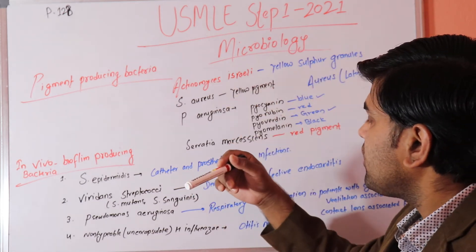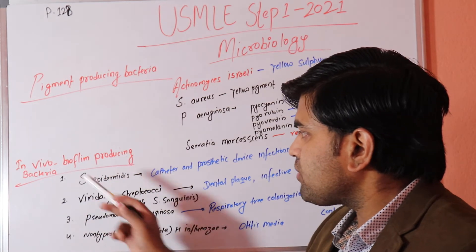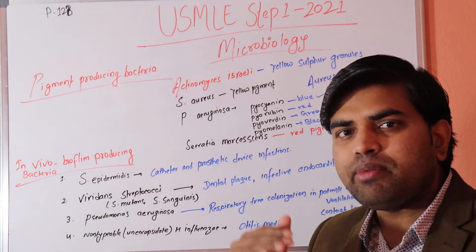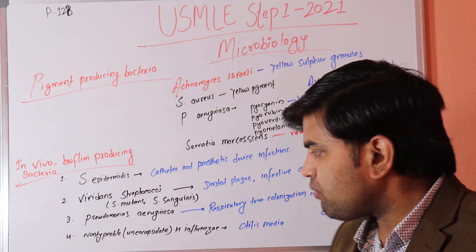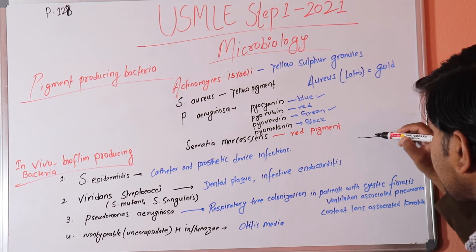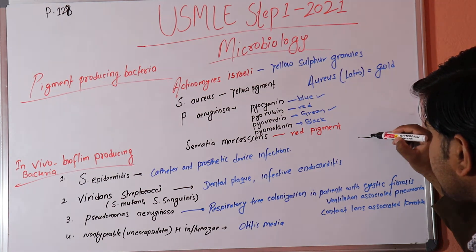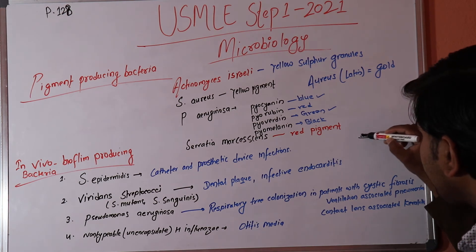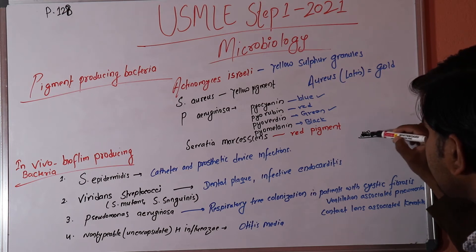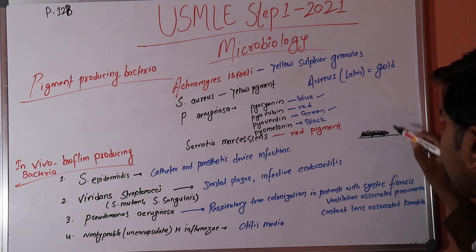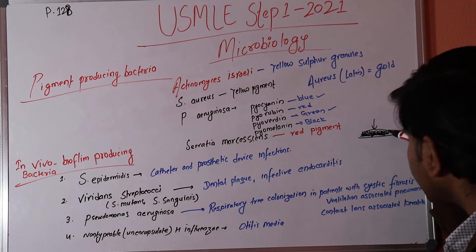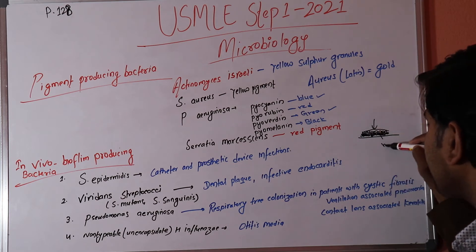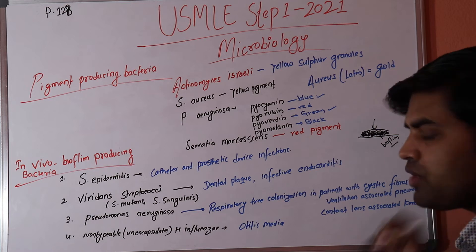Now moving to biofilm-producing bacteria. Biofilm means organisms form layer upon layer over a surface. A bacterium attaches to a surface, reproduces, and forms a film, then deposits polymers and additional layers. When antibiotics are given, only the outer surface bacteria are killed — the inner layers survive, maintaining a persistent source of infection.